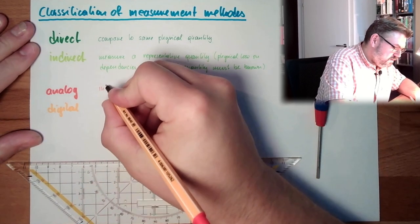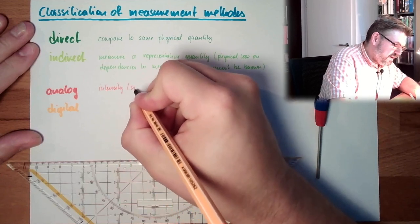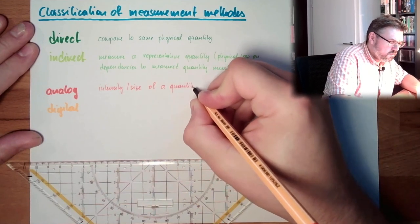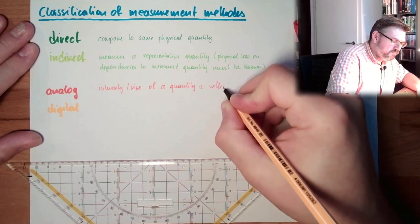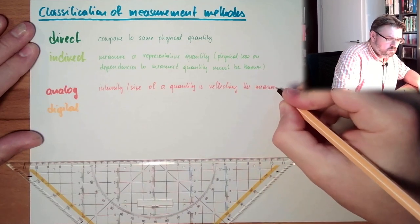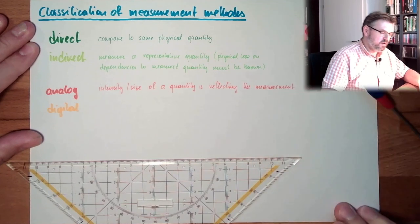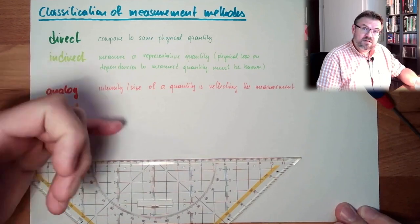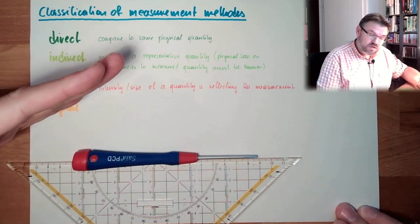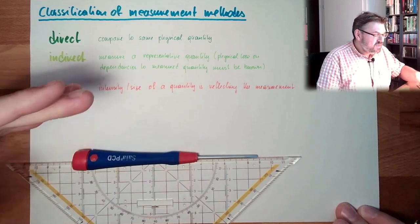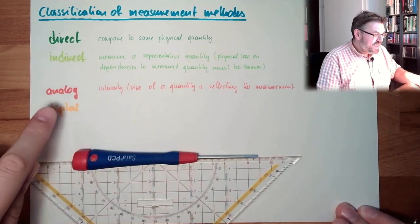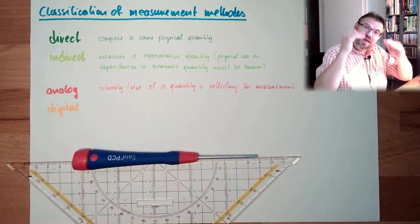So, in analog, the intensity, size, of a measured quantity is reflecting the measurement. So, if it's high intensity, high size, in my example, high voltage, the measurement is high. If it's low intensity, low size, low amplitude, the measurement is low. So, the intensity, the amplitude, the size of my quantity I'm measuring is analog to my measurement. They're changing analog accordingly.